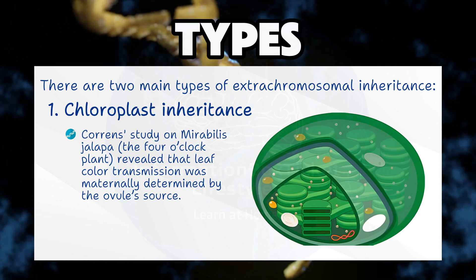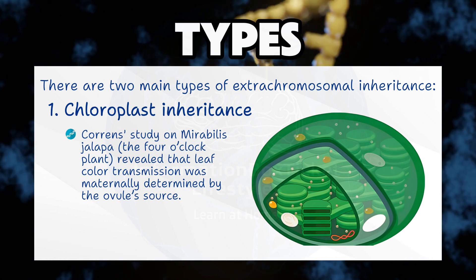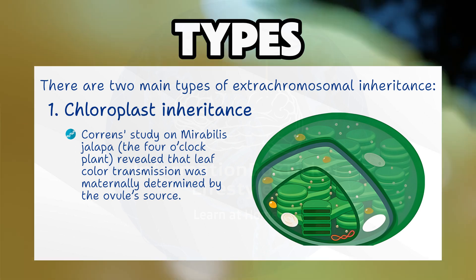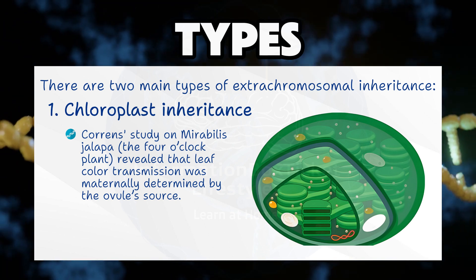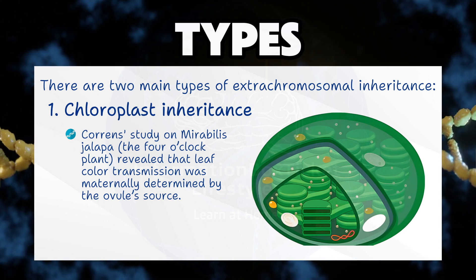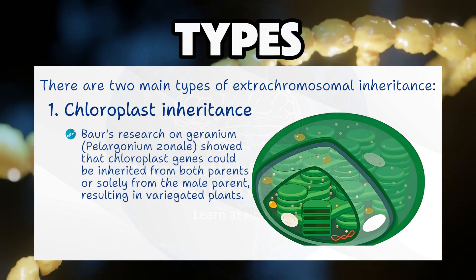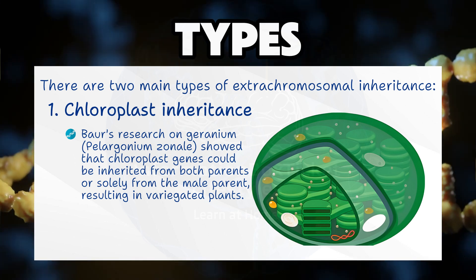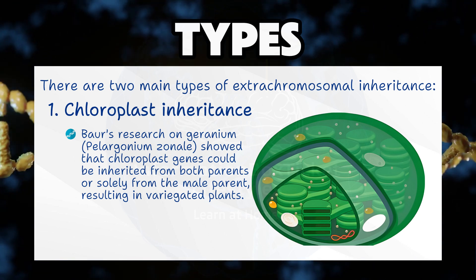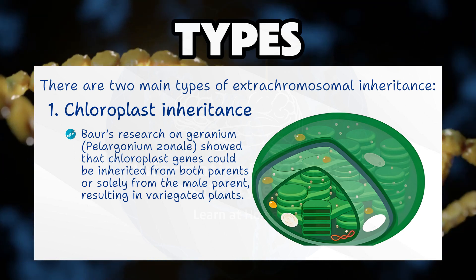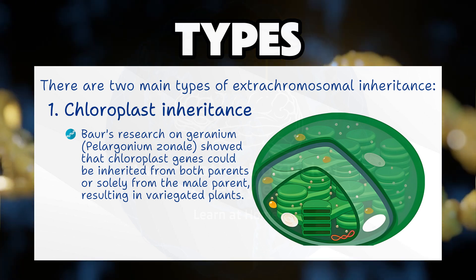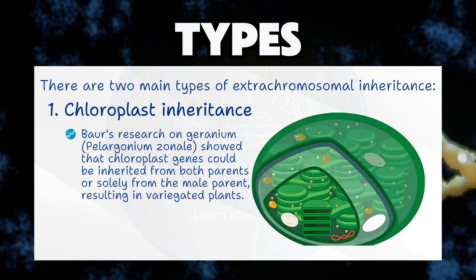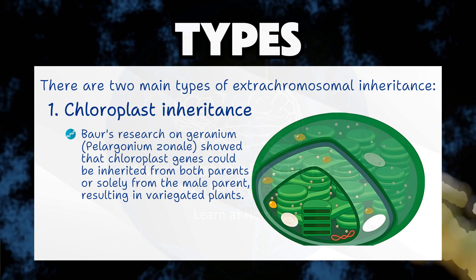Korens' study on Mirabilis jalapa, the four o'clock plant, revealed that leaf color transmission was maternally determined by the ovule's source. Bauer's research on geranium, Pelargonium zanale, showed that chloroplast genes could be inherited from both parents, or solely from the male parent, resulting in variegated plants.